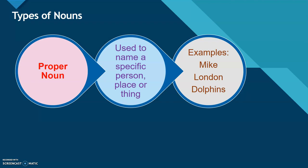Then, we have proper noun. Proper noun used to name a specific person, place, or thing. For example: Mike. Now, Mike is the name of a boy. London. London is the name of a city. Then we have Dolphins. That is an animal.